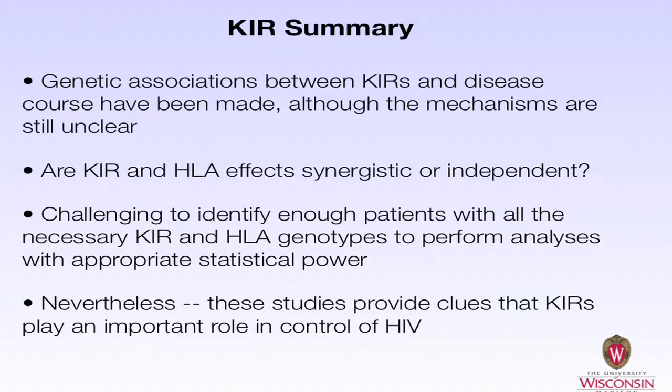To provide a summary illustration from a 2009 review: the HLA can affect many different ways that the immune response responds to HIV infection. The HLA can interact with dendritic cells, the HLA genes can interact with KIR molecules to elicit NK immune responses, and the HLA can also interact with T cell receptors on CD8 T cells to elicit effective immune responses.